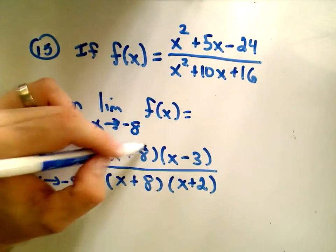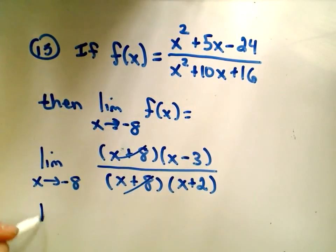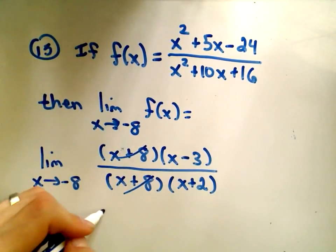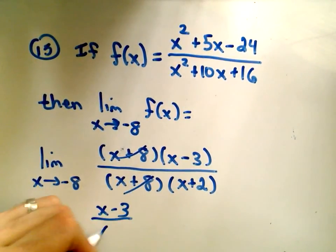We can simply cancel out our factors. And now we're just left with the limit as x approaches negative 8 of x minus 3 over x plus 2.